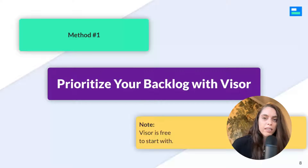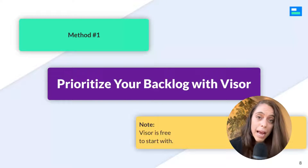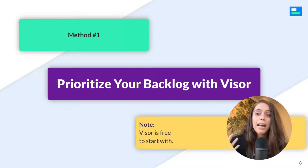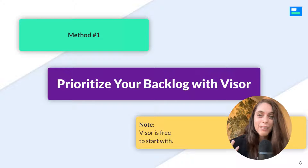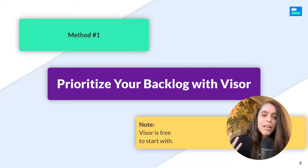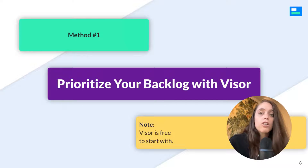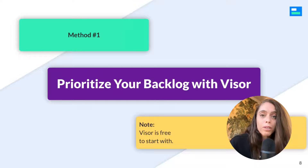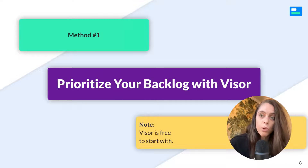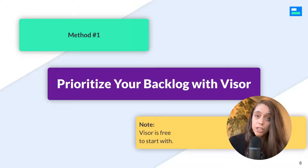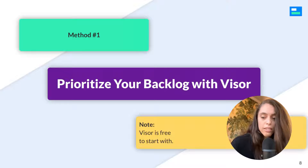Now that we've covered the best practices for Jira backlog refinement and grooming, I'll go into three different methods that allow you to actually filter your backlog. The first method I'll dive into is Visor, because unlike the other two methods — which are done in Jira — with Visor you don't need to know JQL and you don't need to already have labels established for backlog purposes.